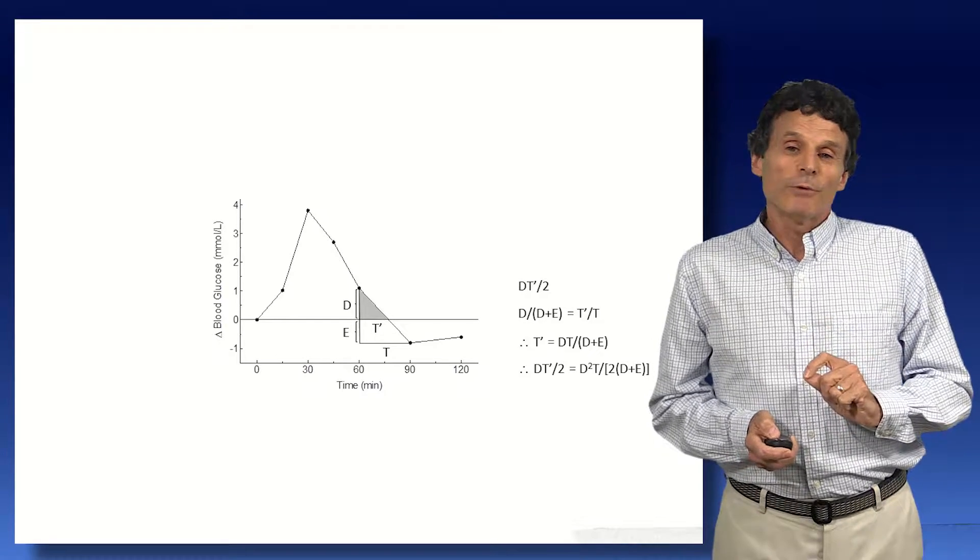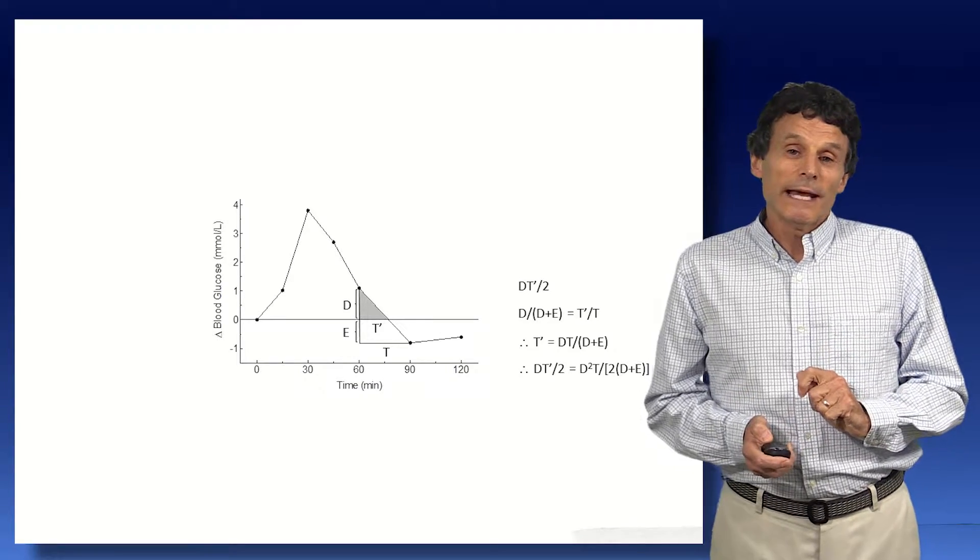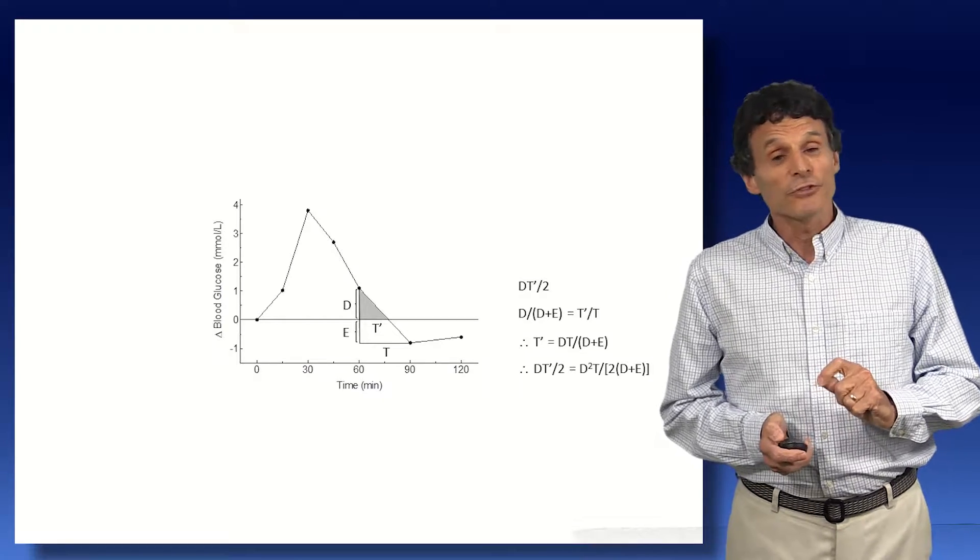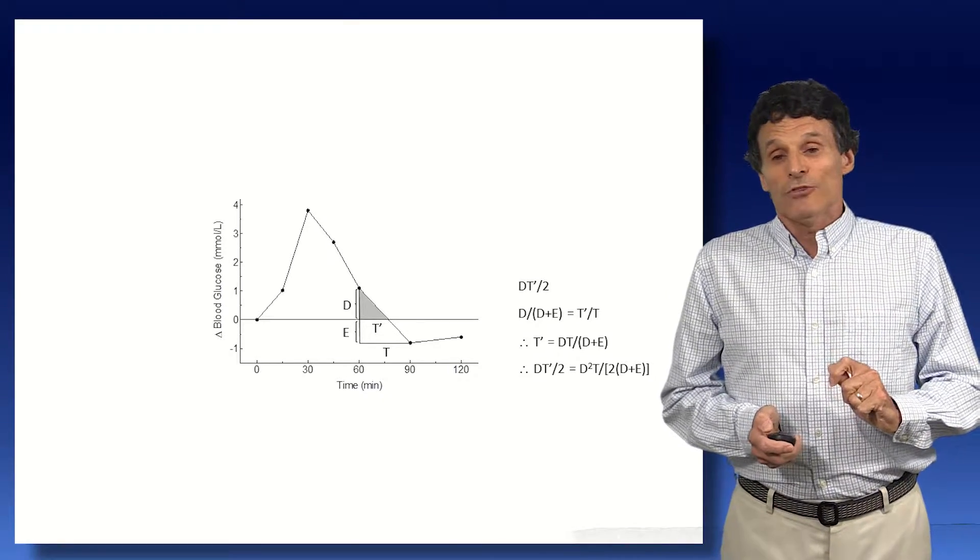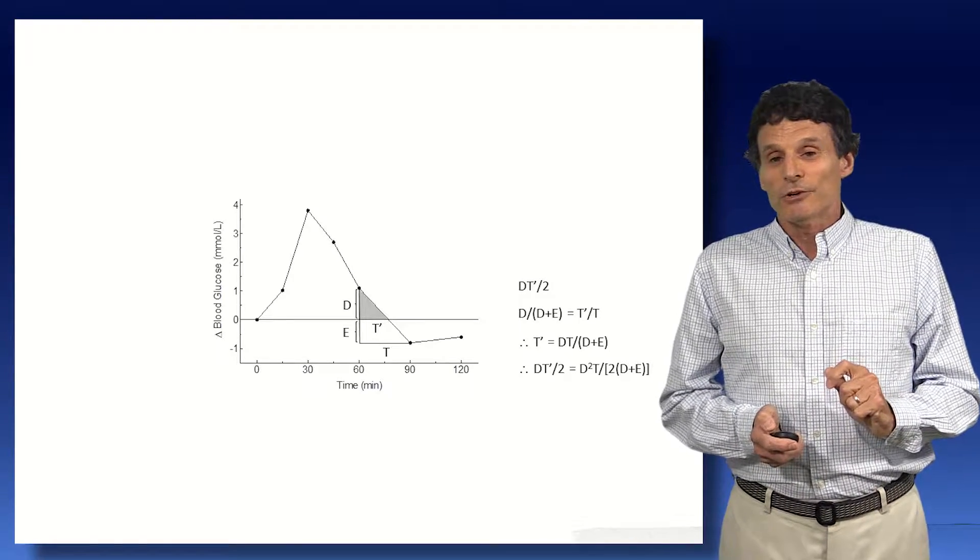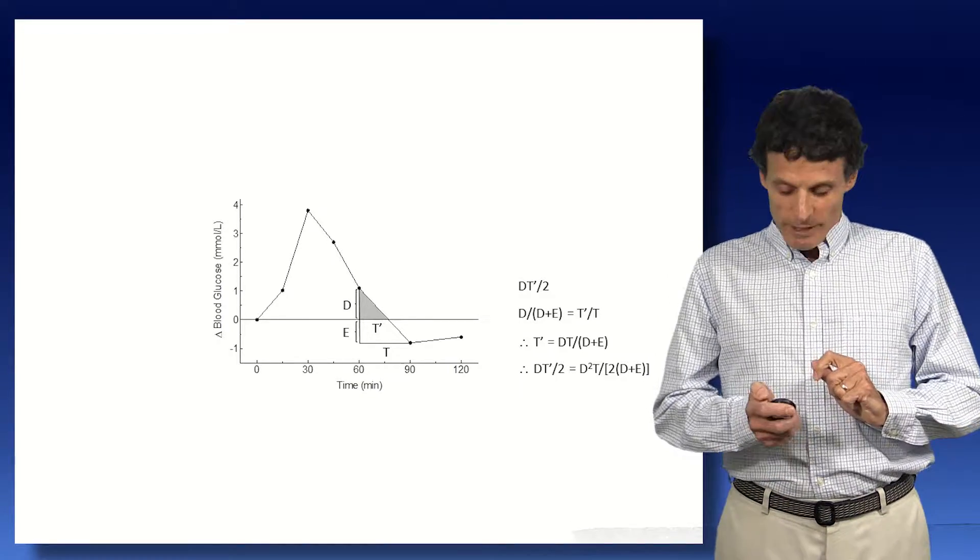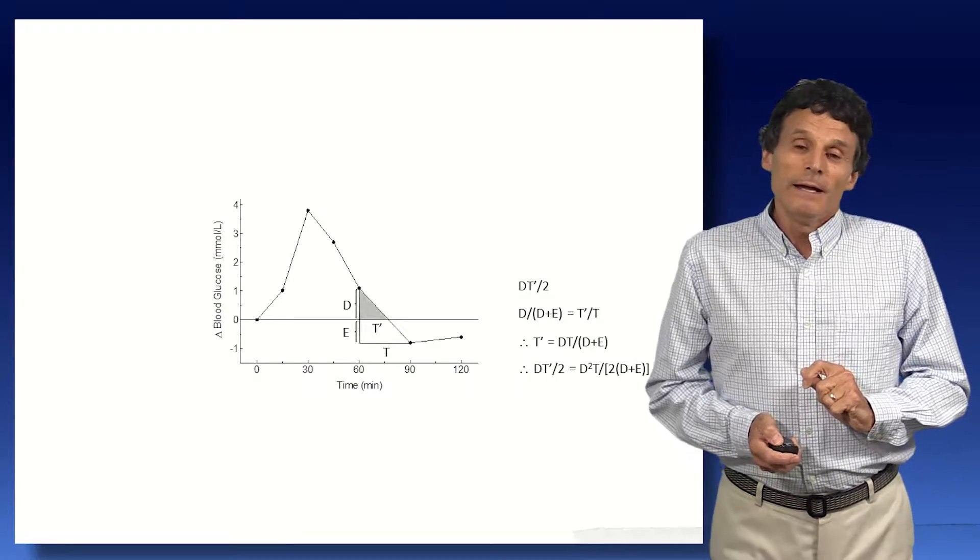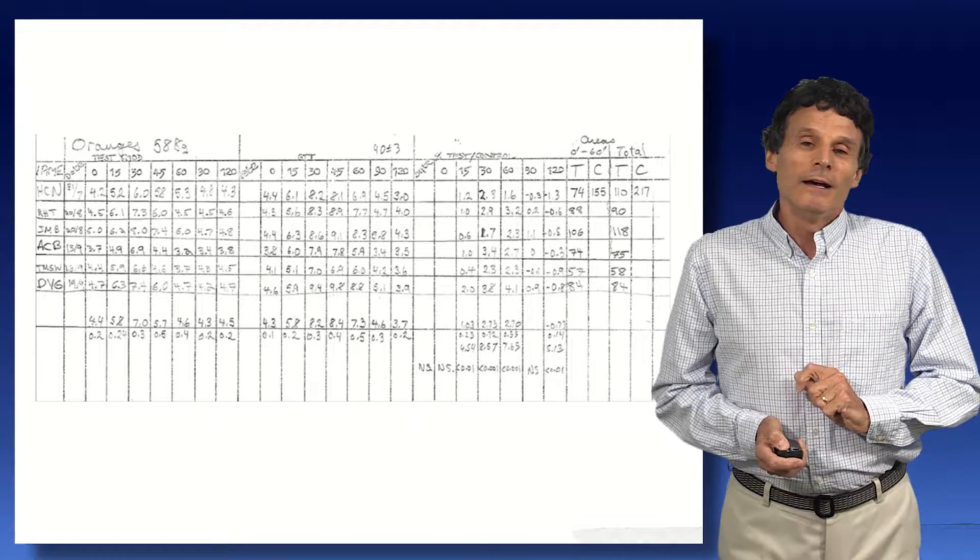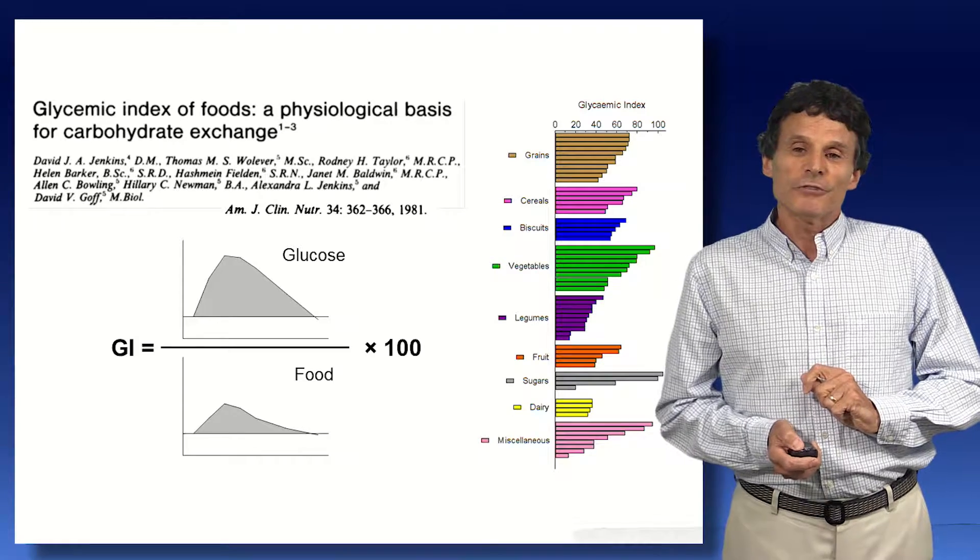Now, this area calculation is rather important in determining GI. And in a study we did with 28 labs around the world in an inter-lab study, I found that more than 50% of the labs actually reported incorrect AUC values. And so when you're reading the literature, it's sometimes rather difficult to know whether the areas have been calculated correctly. I find this rather surprising since glucose responses are relatively elementary things to be studying. Anyway, moving along, we didn't have computers in those days and we used sheets like this to record our data. And so in 1981, we published these results for 62 foods.